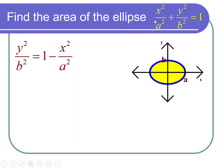To solve for y, first subtract x squared over a squared on both sides and we get y squared over b squared is equal to 1 minus x squared over a squared.